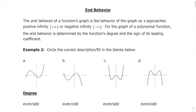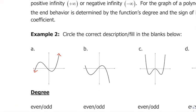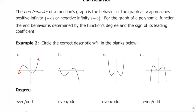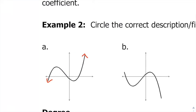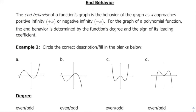End behavior is what the ends of the graphs do. We put arrows at the ends of graphs because they continue doing whatever they're doing. The end behavior of a function's graph is the behavior as x approaches positive infinity or negative infinity — basically, as the graph goes to the left and right, is it going up or down. For a polynomial function, end behavior is determined by the function's degree and the sign of its leading coefficient.